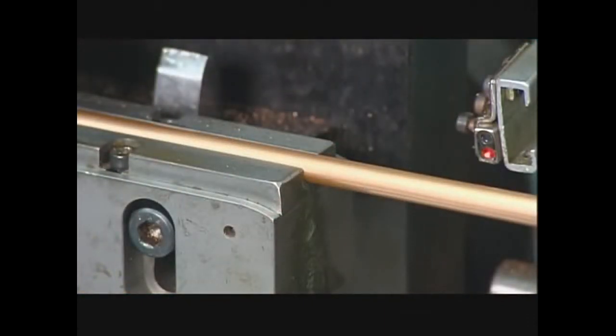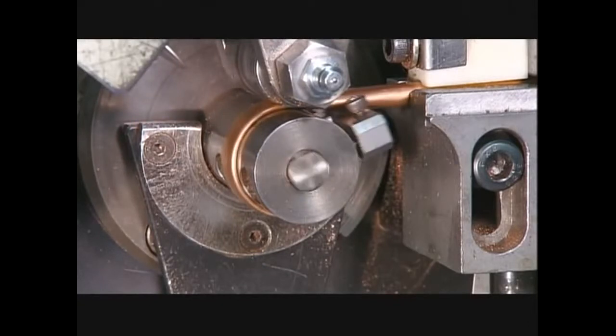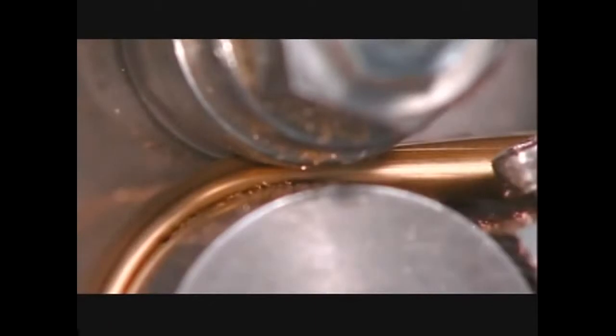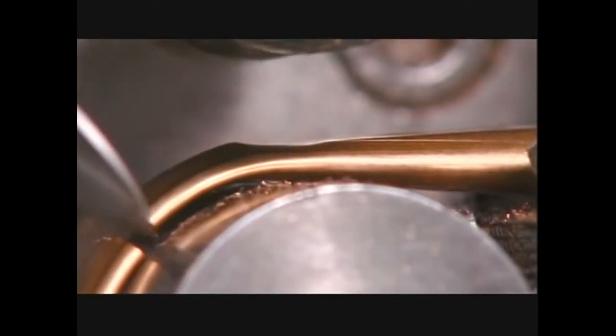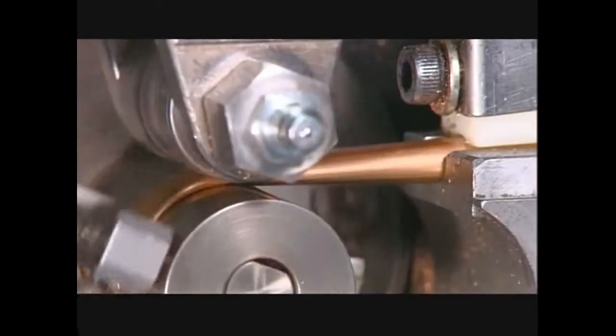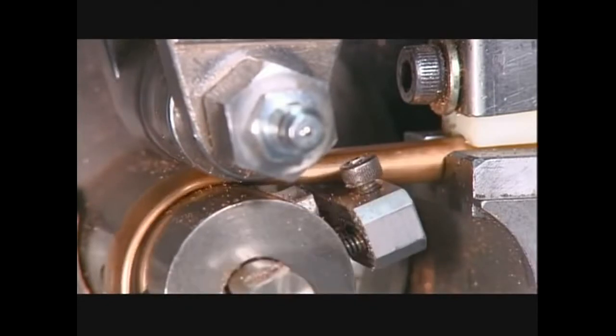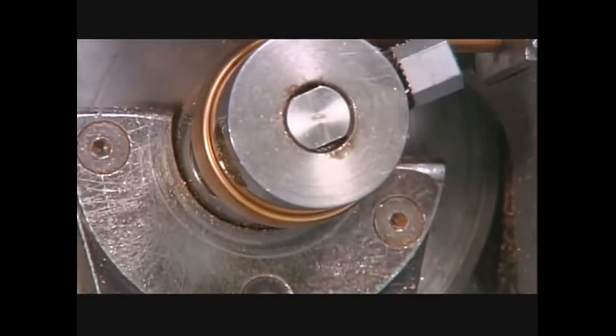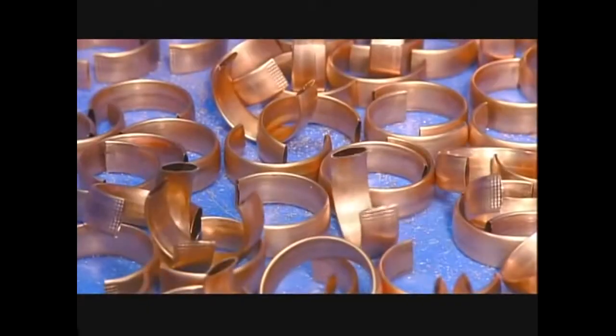Then a worker puts a copper tube into a bending machine that bends, cuts, and flattens sections of the tube. The amount of flattening and bending determines the pressure range the gauge can measure. Each piece becomes a pressure sensing tube known as a bourdon tube.